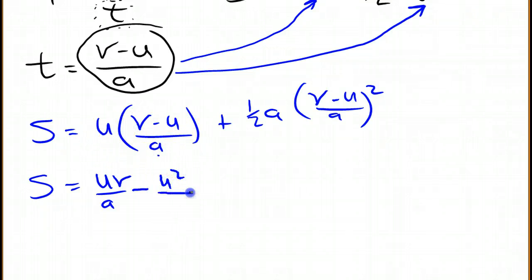which is u squared over a plus one half of a. Now v minus u squared is going to be v squared minus 2uv plus u squared.